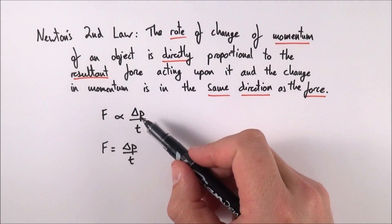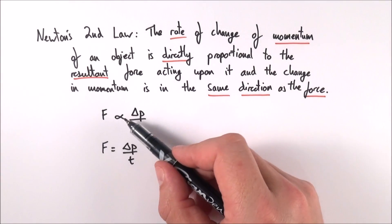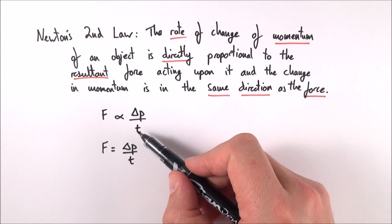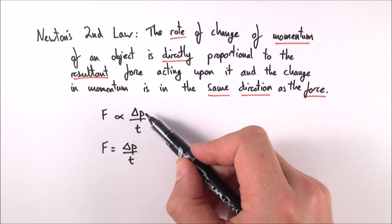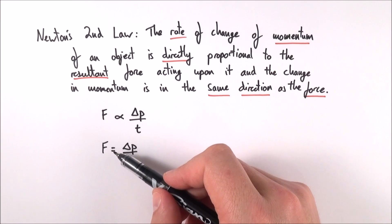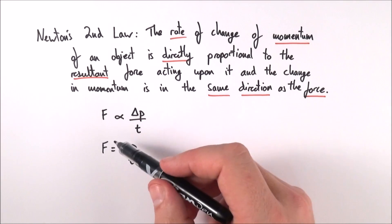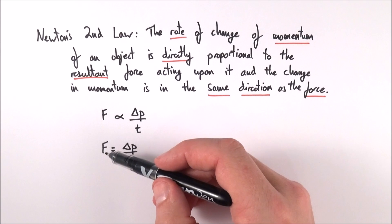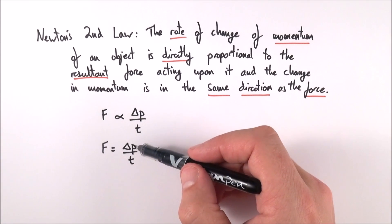Now we can write the same thing as the force is proportional to delta P over T. So this is just our change in momentum with respect to time, and we can get rid of the proportional sign and put an equal sign in, provided we measure everything in SI units.